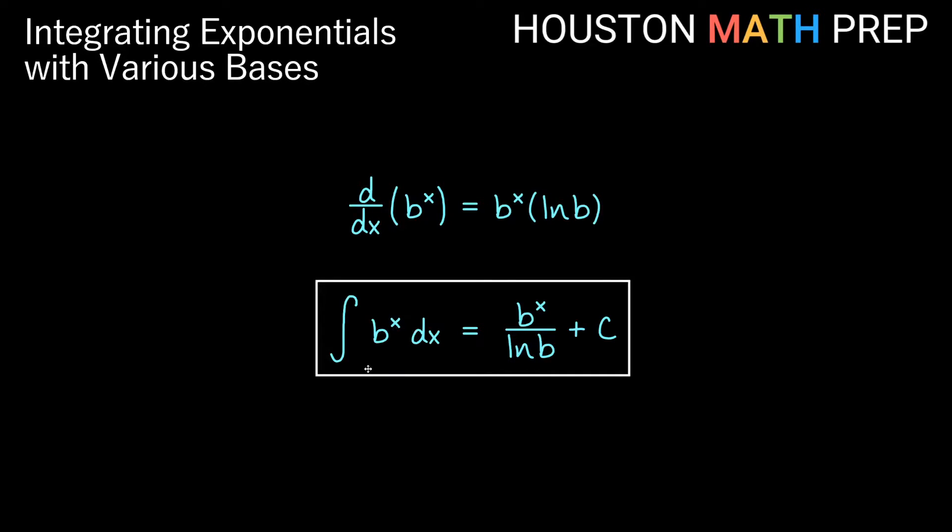So we know the integral of e to the x is itself, e to the x plus c. Here if you have a different base, the overall exponential rule for integrals, the antiderivative of some base to the x dx is going to be that same thing divided by ln of the base plus c.